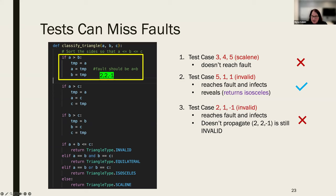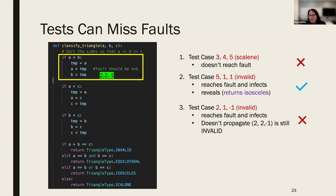A third test case (2, 1, -1) is also invalid. It also reaches the fault and incorrectly changes the state to (2, 2, -1). But because of the negative side, when it reaches the check for geometric validity, it returns 'invalid.' So this test reached the fault and infected it, but it didn't propagate out — it won't actually detect the fault for us. Furthermore, even if I removed the invalid-check block entirely and covered all the code, I could still not find the problem. I also need to know the specifications and test from that level — just testing the code is not enough.